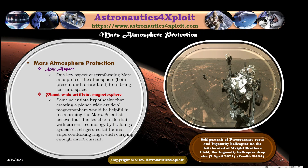Mass atmosphere protection: One key aspect of terraforming Mars is to protect the atmosphere from being lost into space. Some scientists hypothesize that creating a planet-wide artificial magnetosphere will be helpful in terraforming Mars. Scientists believe that it is feasible to do that with current technology by building a system of refrigerated longitudinal superconducting rings, each carrying enough direct current.